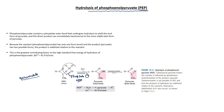When phosphoenol pyruvate undergoes hydrolysis, two products are formed: inorganic phosphate is released, and pyruvate is formed. When phosphoenol pyruvate is hydrolyzed, first the enol form of pyruvate is formed, but the enol form of pyruvate immediately tautomerizes to give the keto form.